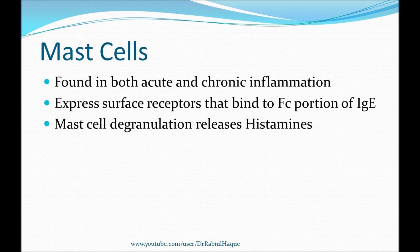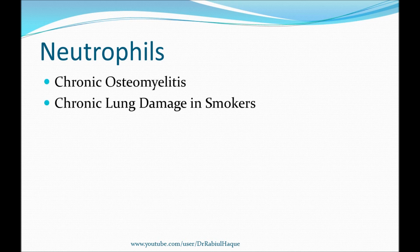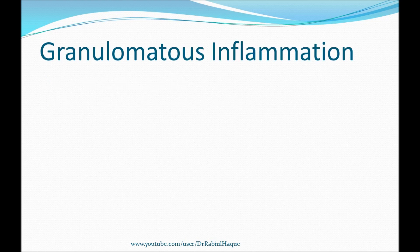The last cell type is neutrophils. We know that neutrophils are characteristic cells of acute inflammation, but in some chronic inflammation, neutrophils can persist for months as well. For example, in osteomyelitis — a chronic bacterial infection of the bone — we can see neutrophilic exudate that persists for months. Neutrophils may also be responsible for causing chronic lung damage in smokers.